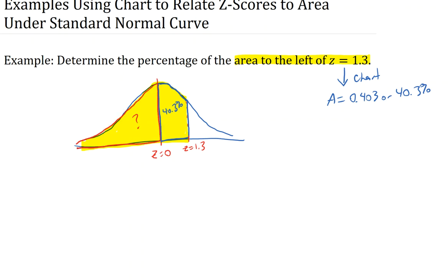But we know that because that's exactly half of the normal curve. So that area is 50 percent. So we're looking for both of those together. So we're going to add 50 percent plus 40.3 percent, which gives us 90.3 percent. That's the answer to the question.